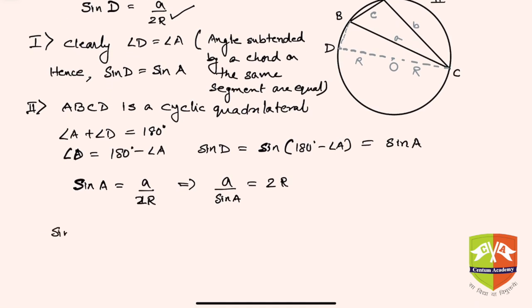Similarly, you can do the same exercise and you will get b by sine B is 2R, and similarly you will get c by sine C is also equal to 2R.